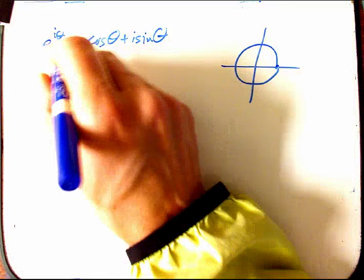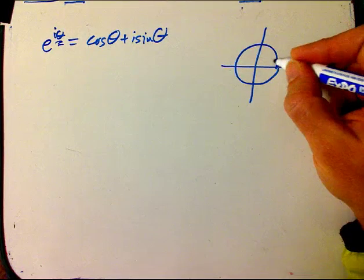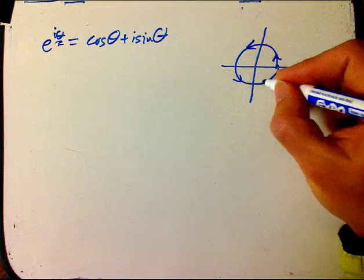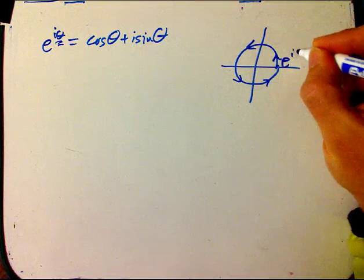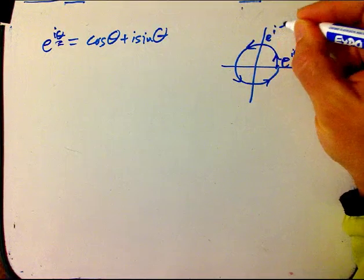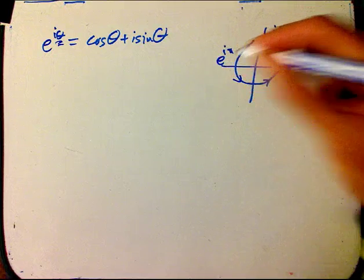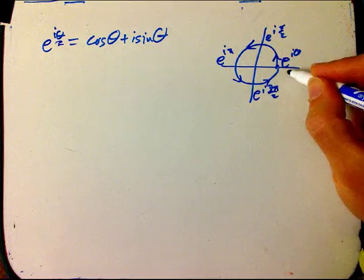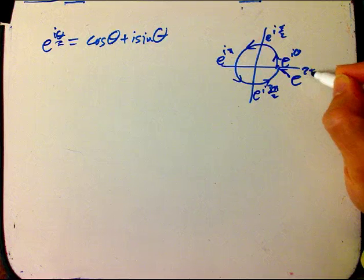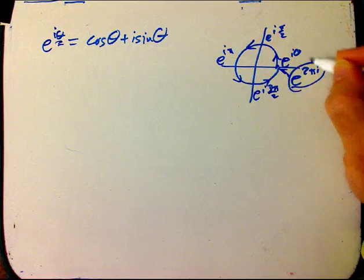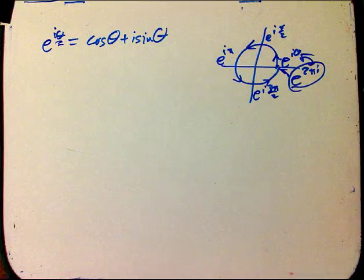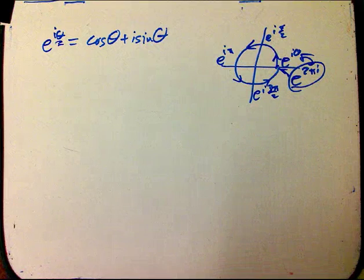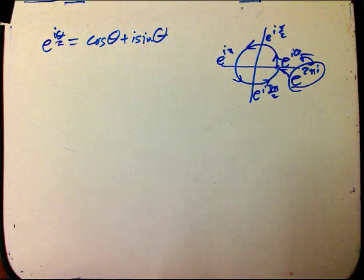So this is e to the i zero, this is e to the i pi over two, e to the i pi is minus one, famously, e to the i three pi over two, and then, interestingly enough, e to the two pi i is also the same as e to the i zero. That's going to be a little bit disturbing for us in a minute. But that's still cool.